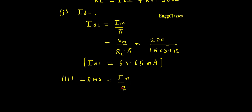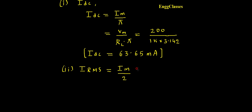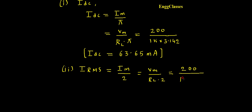To find IRMS, I express IM in terms of VM: IM = VM / RL. So IRMS = VM / (RL × 2) = 200 / (1000 × 2) = 200 / 2000. This gives IRMS = 0.1 ampere. That is the second parameter.